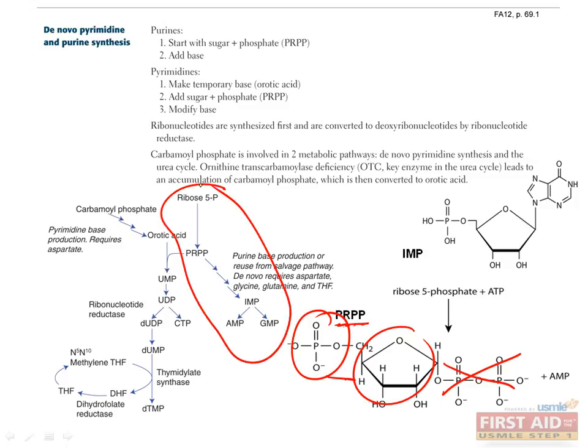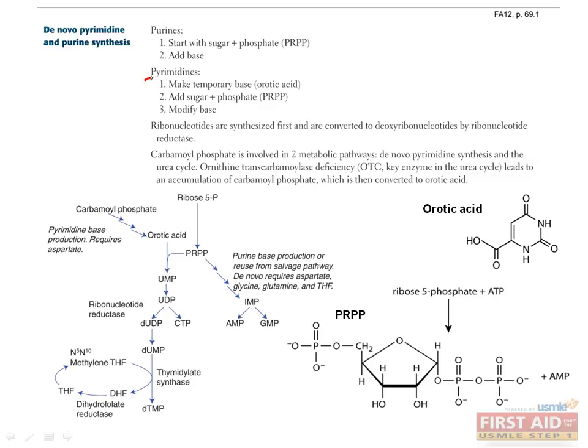In the case of purine synthesis, we're going to build a precursor base called hypoxanthine onto our PRPP, which results in a nucleotide called IMP, or inosine monophosphate. The amino acids aspartate, glycine, and glutamate provide the materials to make this. From here, modification of functional groups on the base will convert this to AMP by converting this ketone to an amine group, or GMP, by adding an amine group here. That's it for purines.